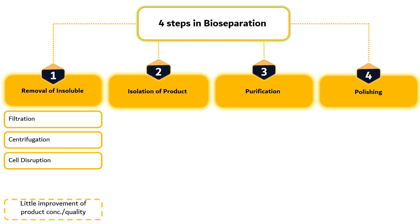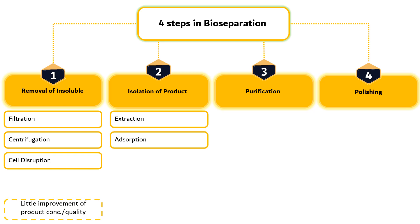The second step is isolation of products, which consists of extraction and desorption. The primary objective of this step is to isolate the product of interest, which results in a large increase of product concentration.